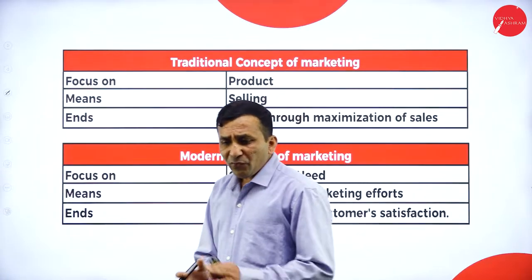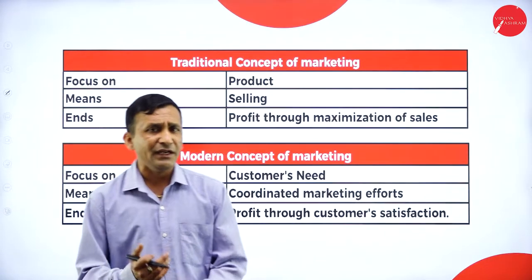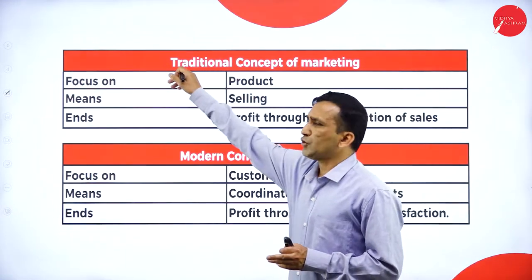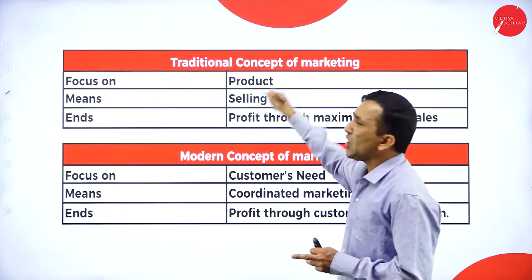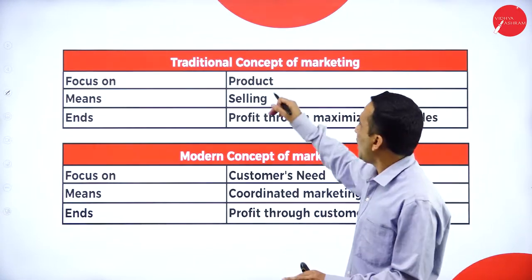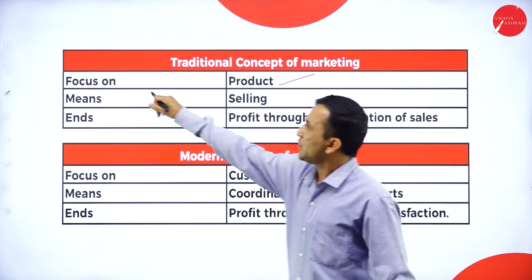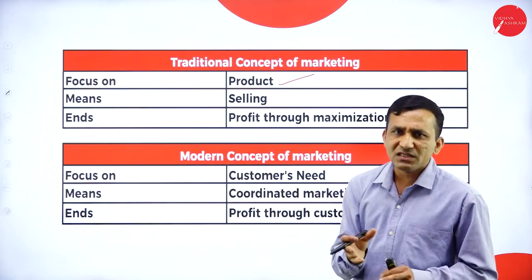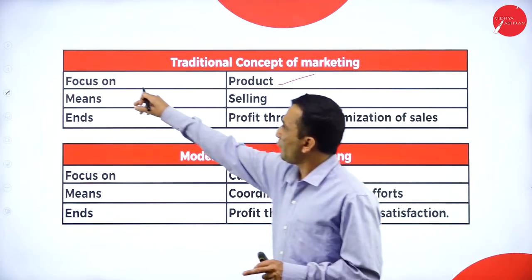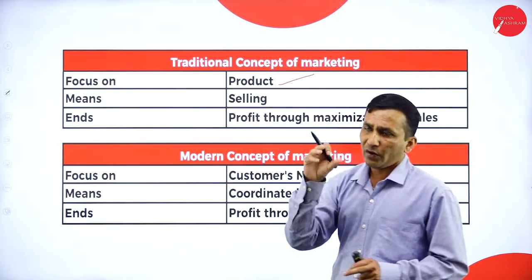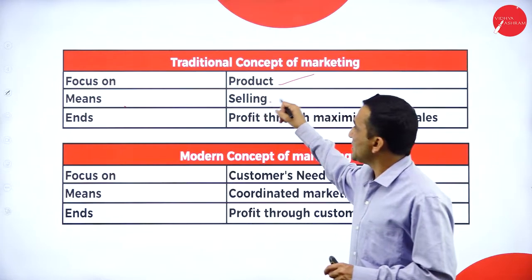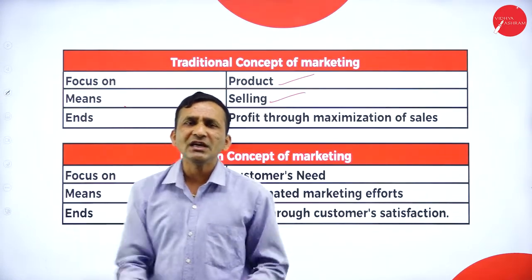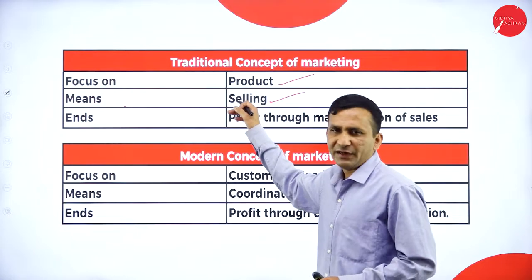Before studying marketing, we need to know how the marketing evolution works. The traditional concept of marketing is always focused on the product — offered by the seller or company. The focus is always on increasing sales. In traditional marketing, they are always focusing on increasing sales volume, ending with profit through maximization of sales.